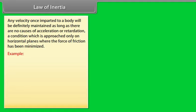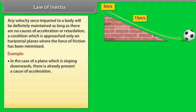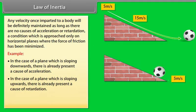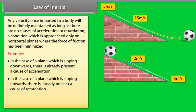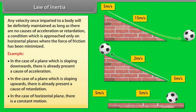Let us take an example. In the case of a plane which is sloping downwards, there is already present a cause of acceleration. In the case of a plane which is sloping upwards, there is already present a cause of retardation. In the case of a horizontal plane, there is constant motion.